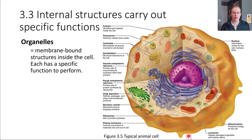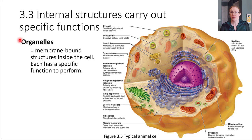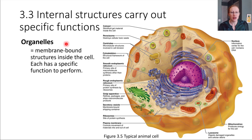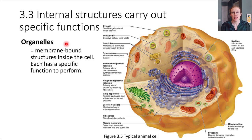We're going to go through a number of these different organelles — these different structures that you see. The word organelle really means something like 'tiny organ.' These are very small structures that do specialized things for the cell, much like you have organs that do specialized things for your body. All of them are bounded by a membrane inside of the cell, which keeps them contained and somewhat isolated from the rest of the cell.